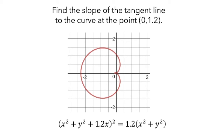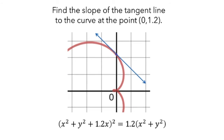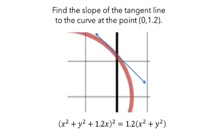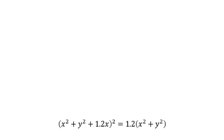We're going to consider a particular case of the cardioid, given by the equation shown here. Our goal here is to find the slope of the tangent line to the curve at the point 0, 1.2 — that is, the slope of this line right here. We can see from here that we're not working with a function. For example, when x equals 0, there are three y values on this graph. So we won't be able to take the equation and just rewrite it as y equals something. But if we zoom in on the point of tangency, now this looks like a function, so we can use implicit differentiation at this point.